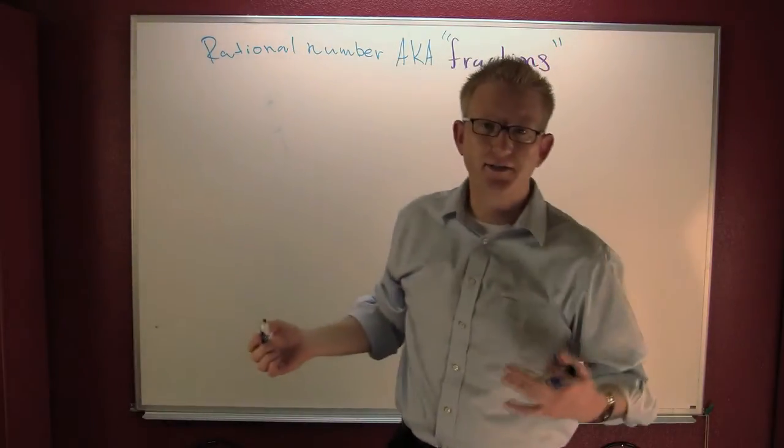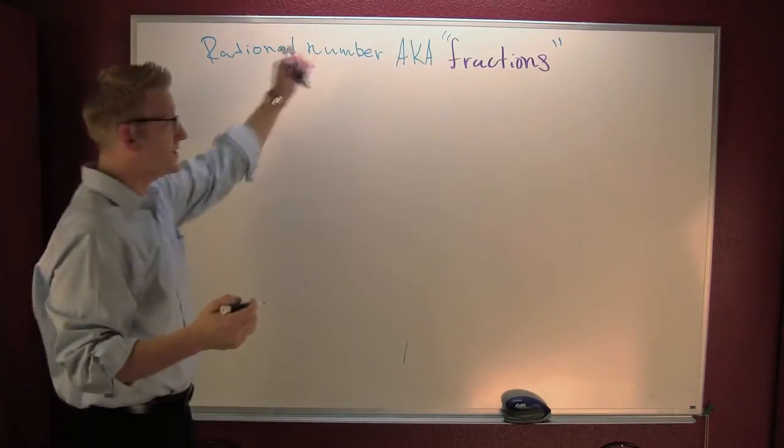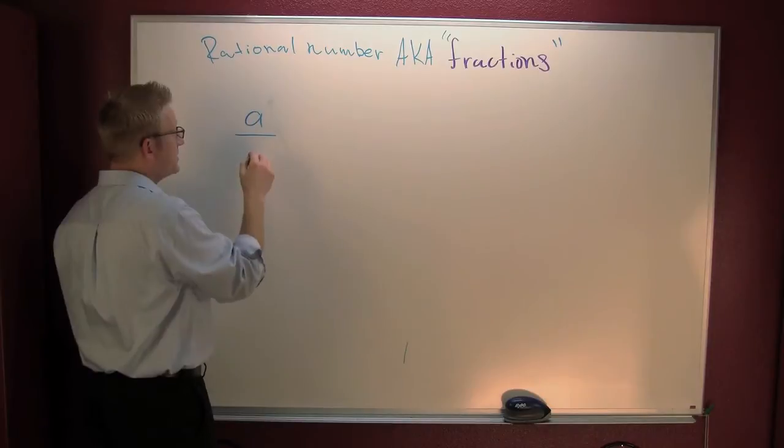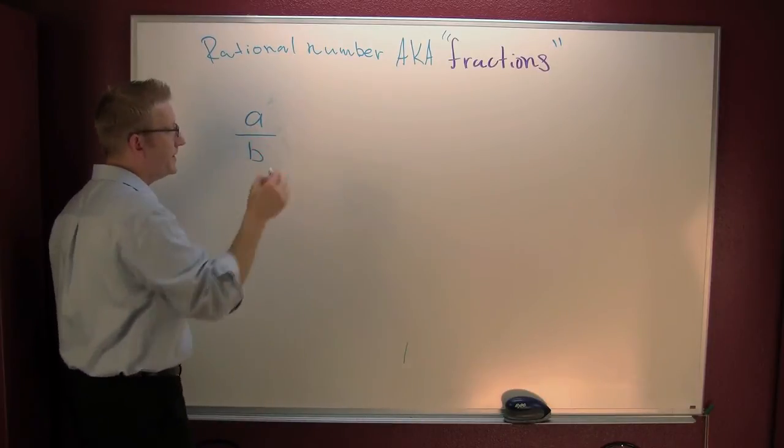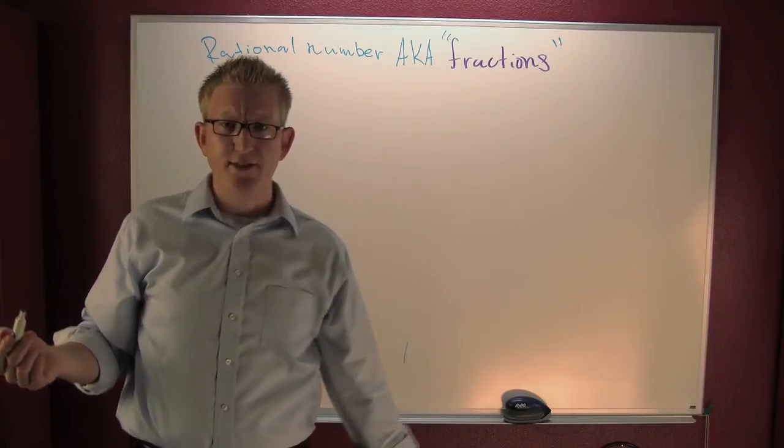They go by fractions on the street, man. Pretty sick. A rational number is the quotient of two integers, A over B. Let's put out some examples of these guys.